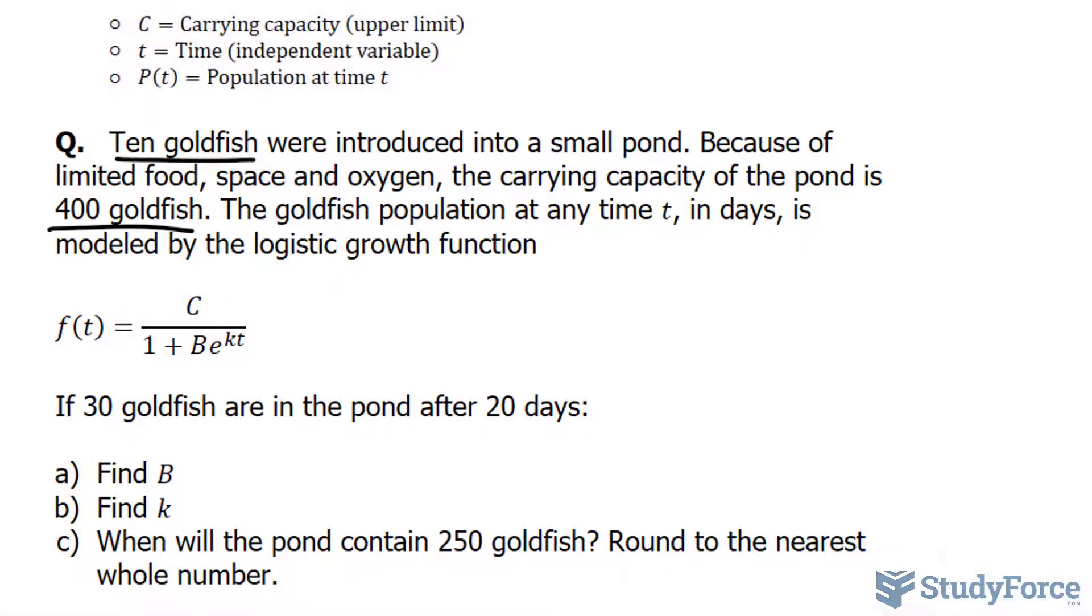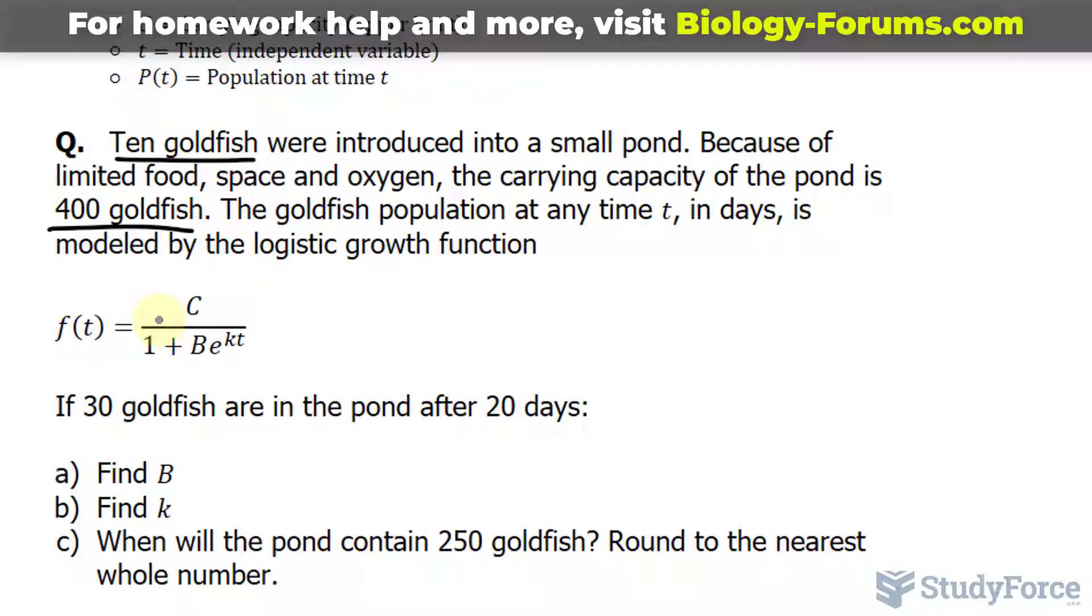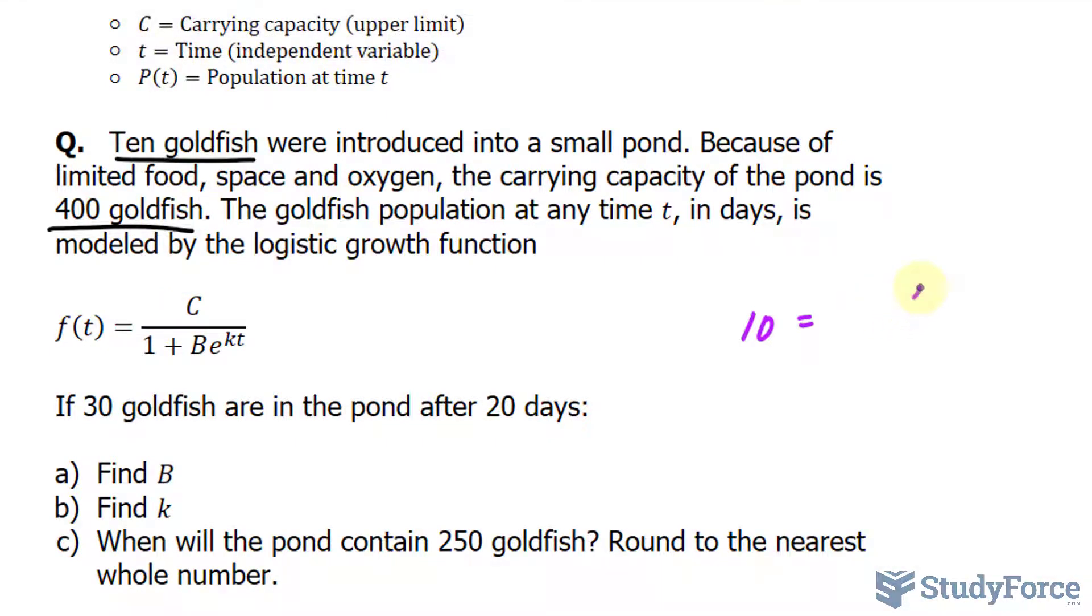Let's begin with a. To find out what B is, we need to substitute these values, the ones that we've been given, into the function. f of t will be replaced with 10, C representing the carrying capacity, the upper limit, will be 400, over 1 plus B, e, K, and since at the very beginning we represent that as time is equal to 0 at 0 days, I'll replace t with 0.